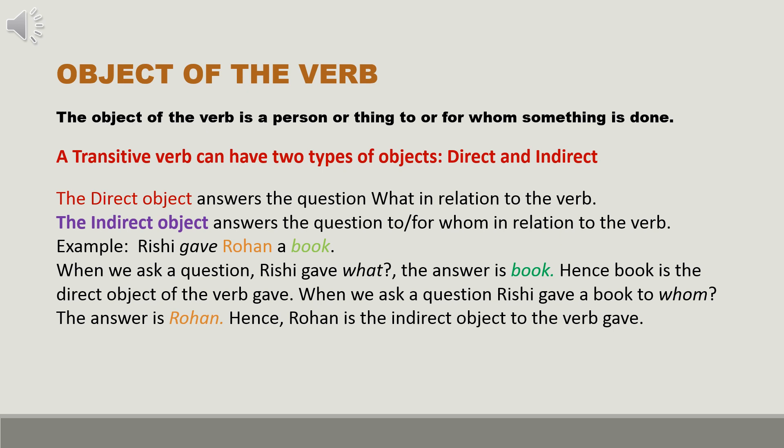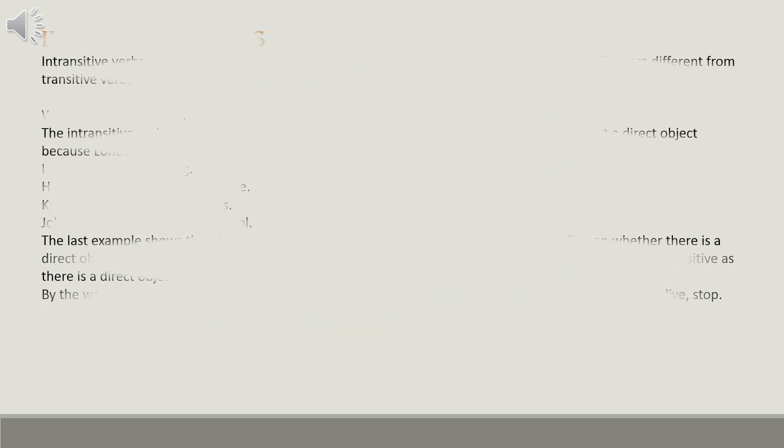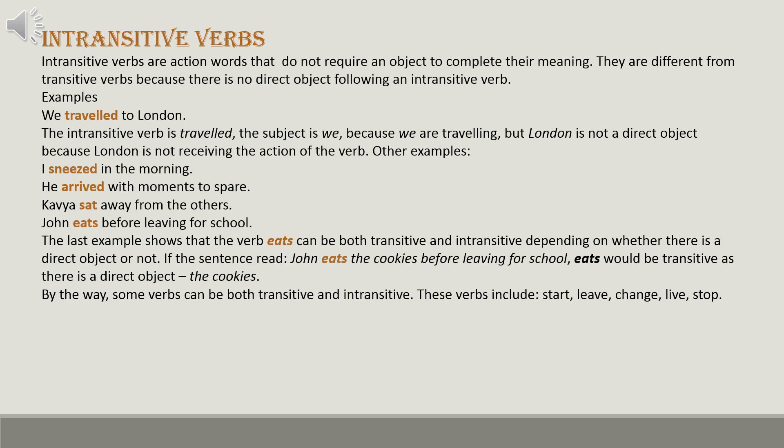For example: 'Rishi gave Rohan a book.' When we ask 'Rishi gave what?' the answer is 'book,' so 'book' is the direct object of the verb 'gave.' When we ask 'Rishi gave a book to whom?' the answer is 'Rohan,' so 'Rohan' is the indirect object of the verb 'gave.'